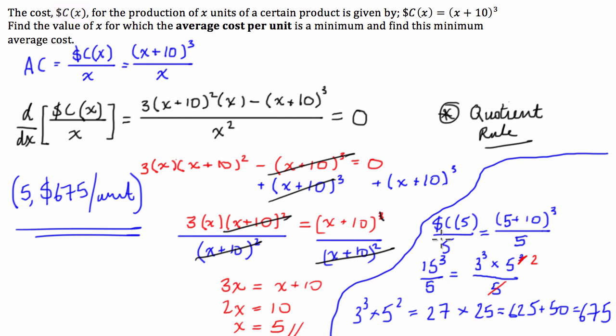So, basically, what we did here is we recognized that the average cost function was just the cost function divided by the number of units that we make. Once we've created a cost function, we were then able to just substitute in, well, we could differentiate it, solve for x, which would then give us the number of units to make, to make the minimum average cost. Following that, we then just substituted that into the original function to find the minimum average cost per unit.